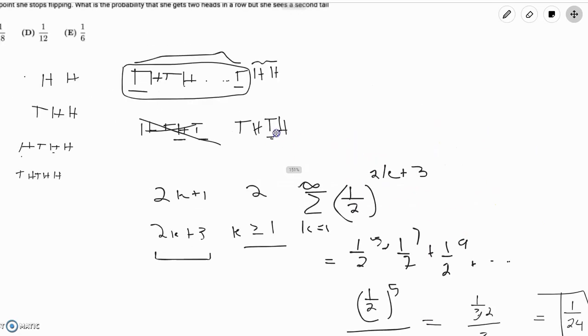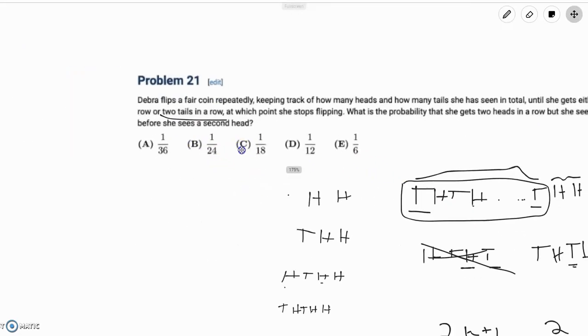So, one over twenty-fourth is our answer. Going back to our answer choices, we see that this corresponds to answer choice B. So, we can mark that, move on, and we are done.